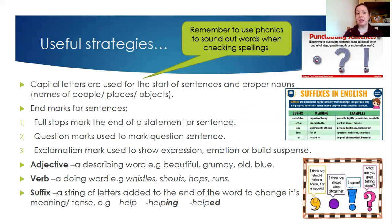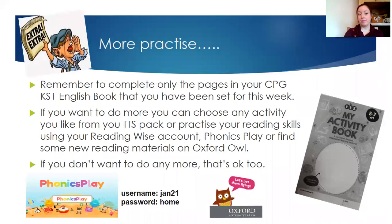Useful strategies — reminders that capital letters are used for the start of sentences and for proper nouns, so names of people, places and objects. End marks for sentences include full stops, question marks and exclamation marks. A reminder that an adjective is a describing word, a verb is a doing word — an action, something that you do — and a suffix is a string of letters added to the end of a word. If you'd like to do more, fantastic, but remember to only do the pages in your CGP book that I've asked you to do this week. If you want to do more, you can do more from your TTS pack, go into Reading Wise, have a go at Phonics Play, or read more books from the Oxford Owl site.